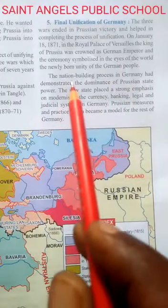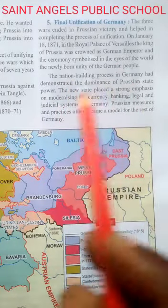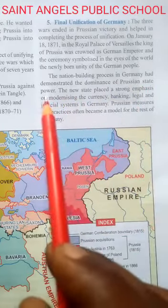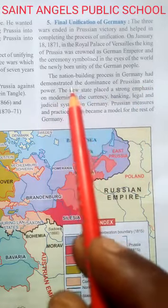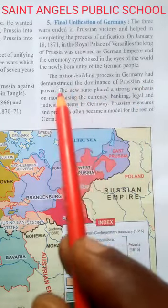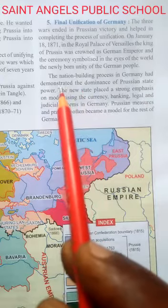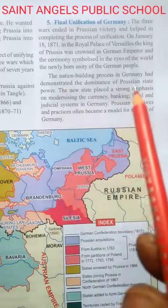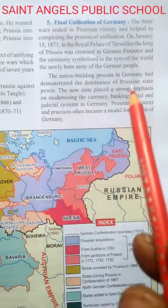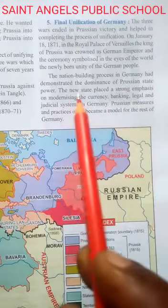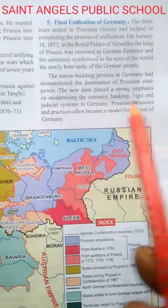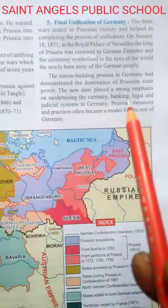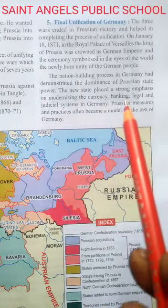The nation-building process in Germany had demonstrated the dominance of Prussian state power. The new state placed a strong emphasis on modernizing the currency, banking, legal, and judicial system in Germany.